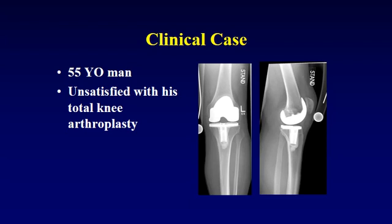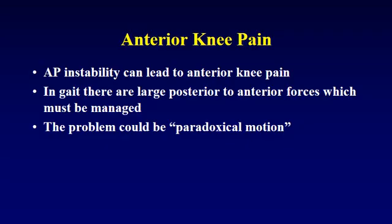The clinical case is that of a 55-year-old man who has a total knee replacement with which he's unsatisfied. He's unsatisfied because it has anterior knee pain and because he feels that his implant doesn't seem to fit his leg appropriately. I believe that anterior knee pain is a function of anterior-posterior instability. To explain, in gait there are large posterior-to-anterior forces which must be managed by the musculoskeletal system, and the problem of anterior knee pain could be paradoxical motion.